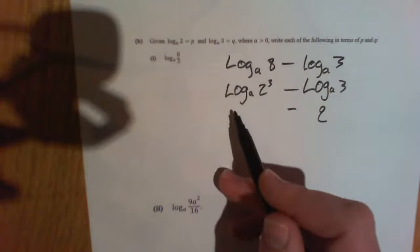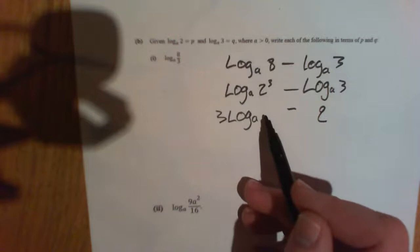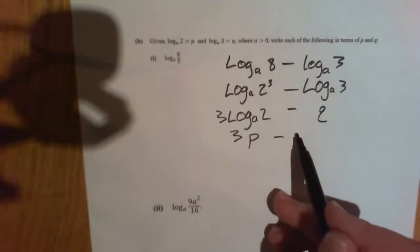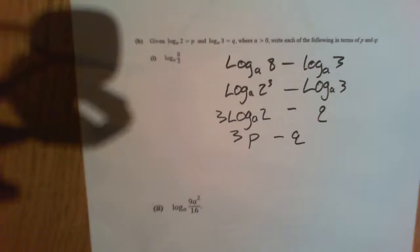Now, log to the base a of 3, well that's q. There's a rule in logs for that. So we can bring that in front. So now we've got 3 log to the base a of 2 and of course that is p. So that's 3p minus q. And we've written it in terms of p and q, which is pretty cool.